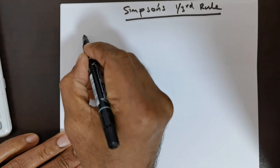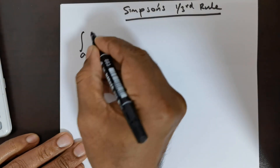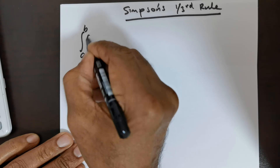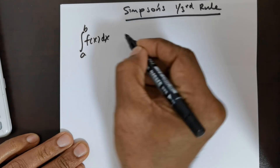Welcome everybody. This is called the Simpson's method. It's given by the following formula: integral from a to b of f(x) dx.